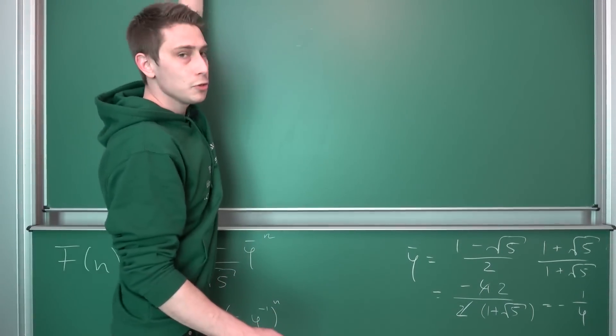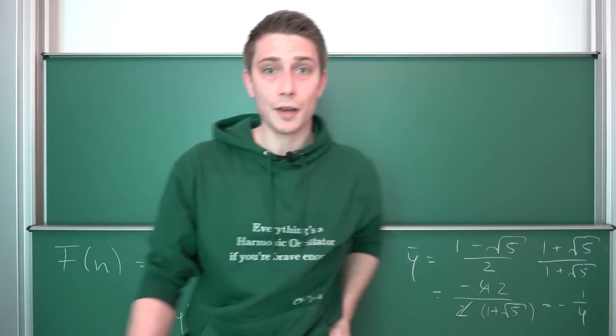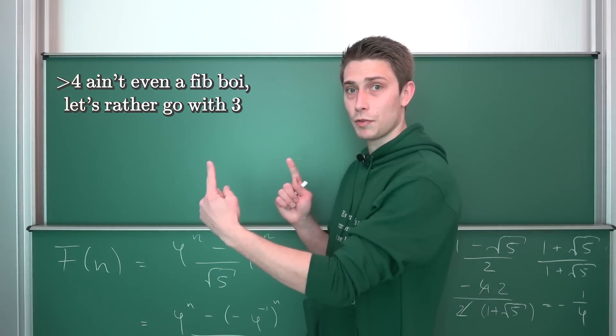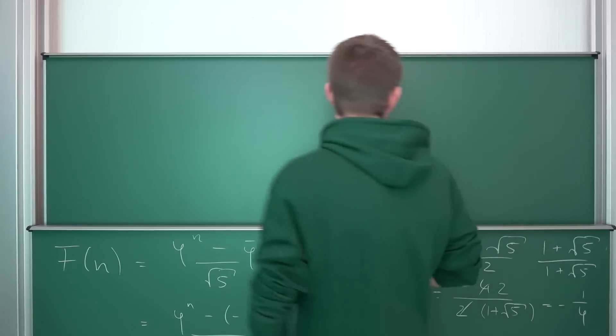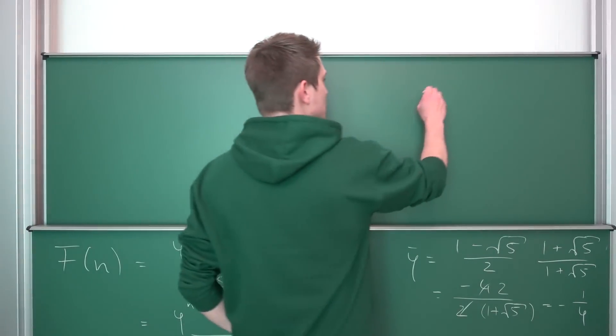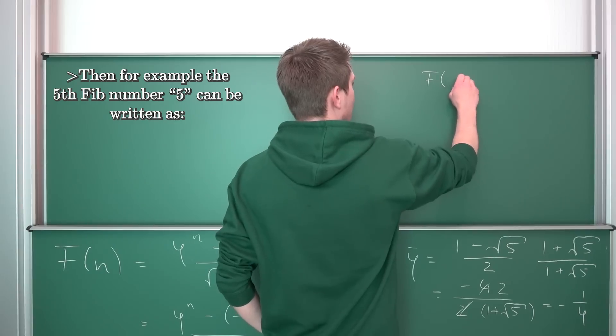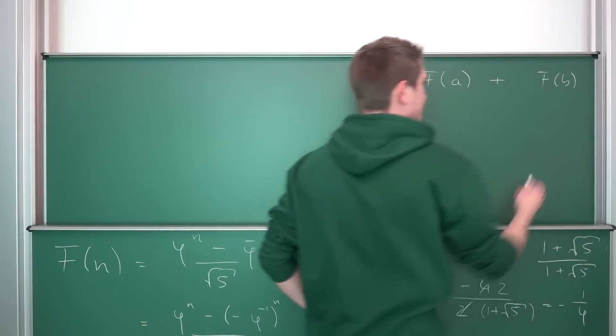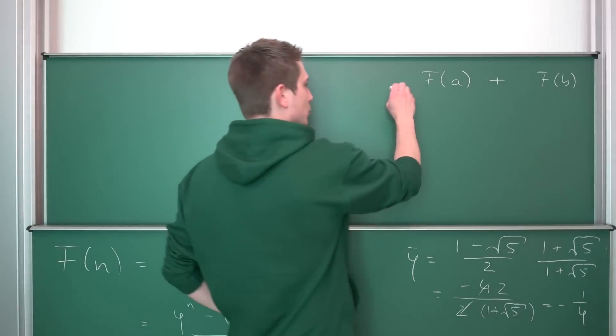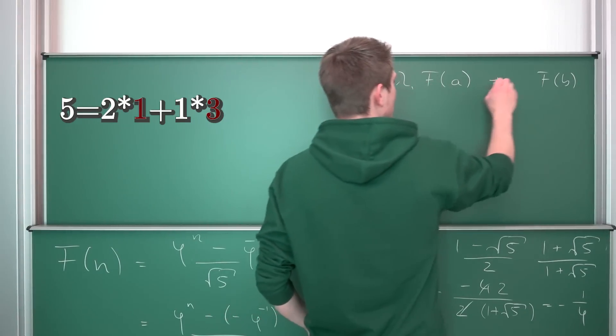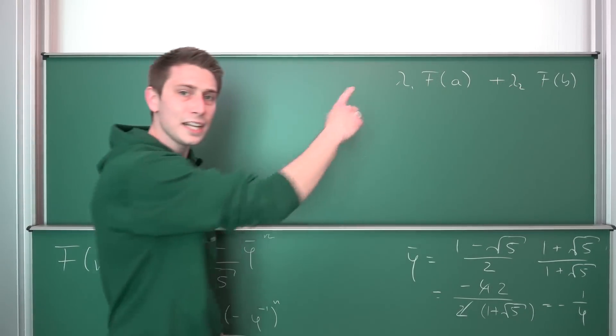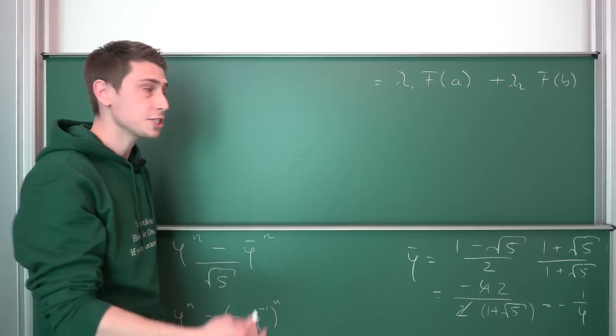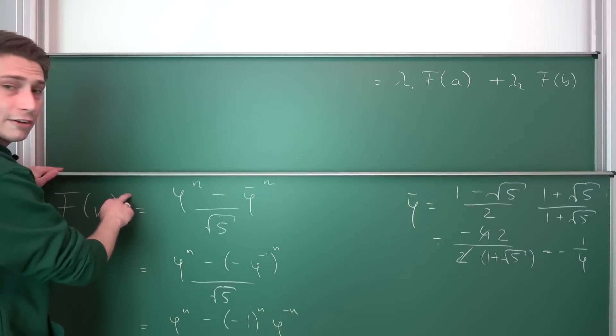If we have two given Fibonacci numbers, for example 1 and 4, we can actually find a linear combination out of those two Fibonacci numbers, meaning we can take two Fibonacci numbers, for example f of a and add it to some kind of f of b. Now we place some scalars in front of it, for example lambda 1 and lambda 2. And a linear combination of those two is actually a solution to our Fibonacci sequence, yet again, to our f of n, for example.